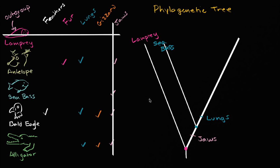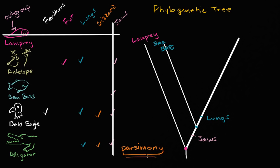This is a property that biologists will often call parsimony. Parsimony in everyday language means cheap — if someone tells you you're parsimonious, it's a nice sounding word, but it means you are cheap. In this context, it means we're trying to be cheap with complexity — we're trying to be as simple as possible in our explanation of what's going on.